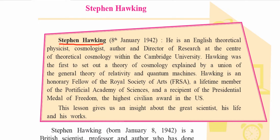What is given in this box: Stephen Hawking was born on 8th January 1942 and died on 14th March 2018. When this article was written, he was still alive, which is why the death date was not originally given. He was an English theoretical physicist, cosmologist, author, and director of research at the Centre for Theoretical Cosmology within Cambridge University. Cambridge University is in London.